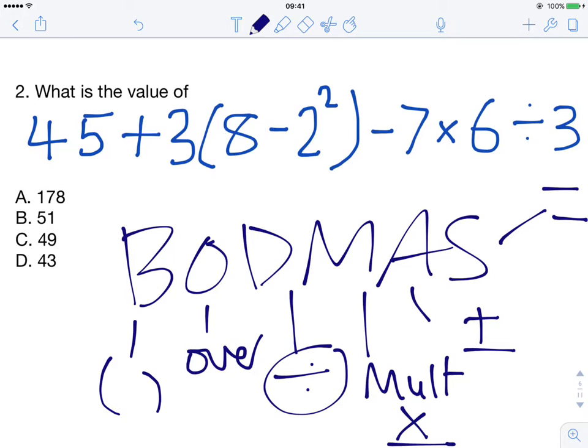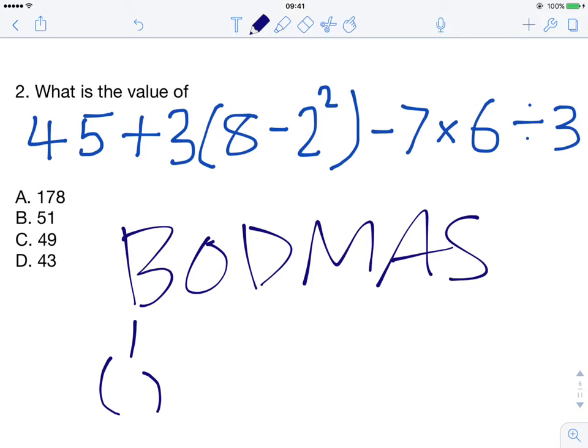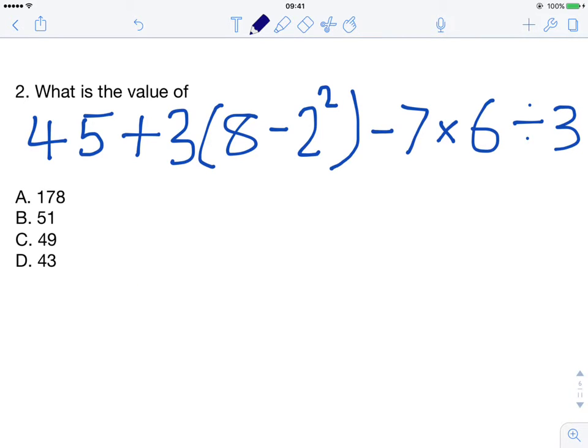Let's use that intuition to solve this problem. We have brackets here, so let's do whatever is in this bracket first. We have 8 minus 2 squared. We know that 2 squared is the same as 2 times 2, which is 4.